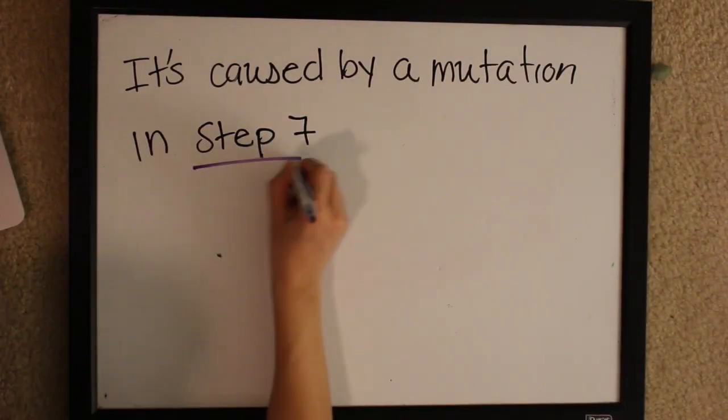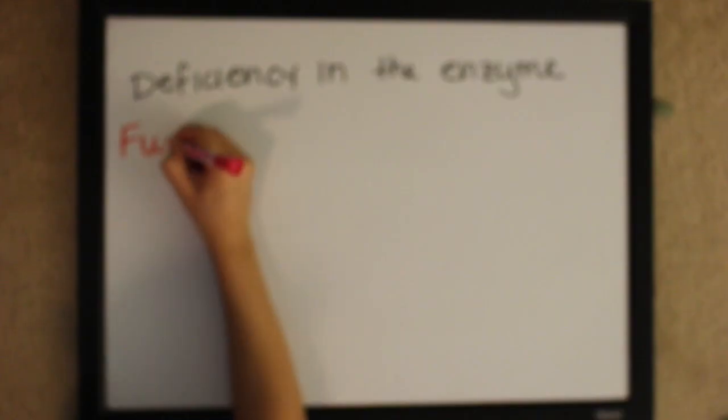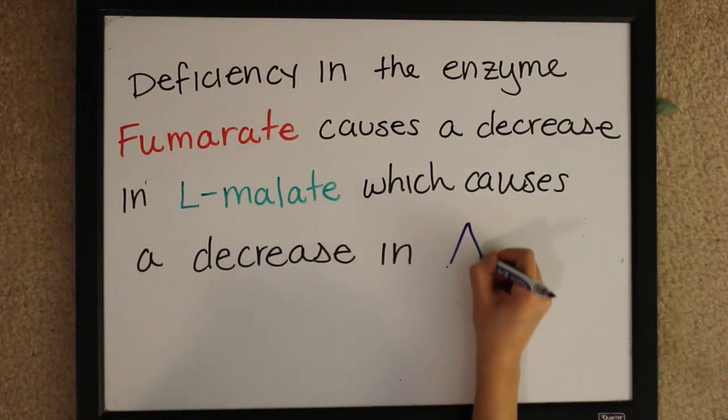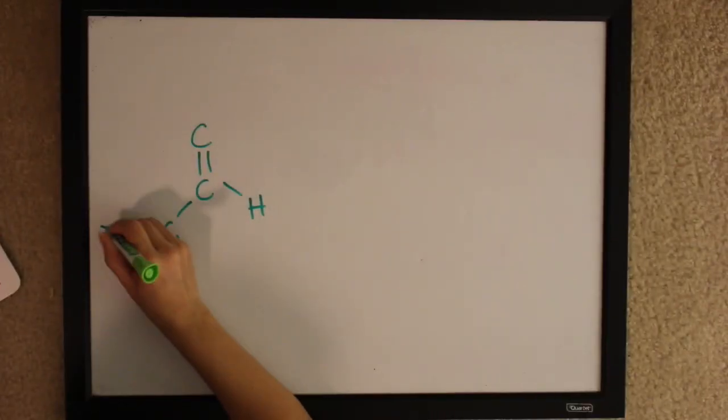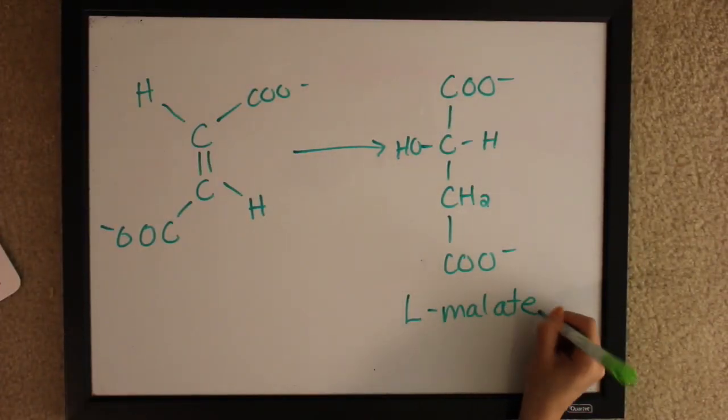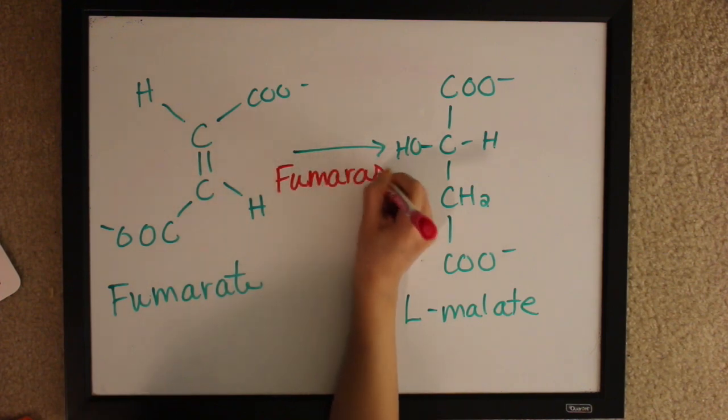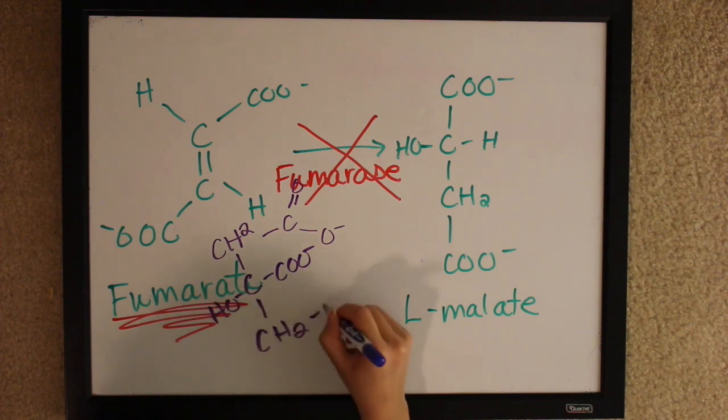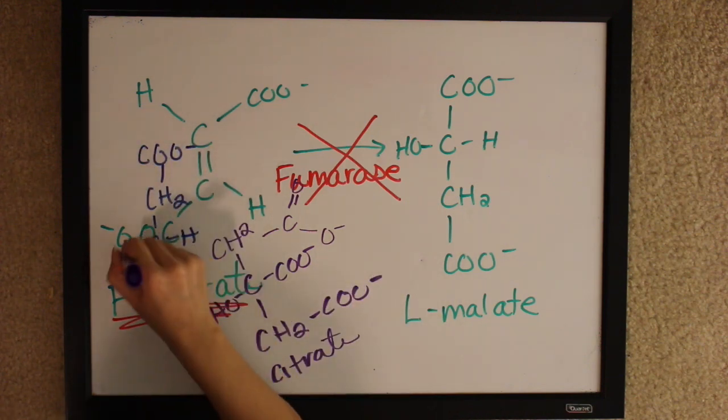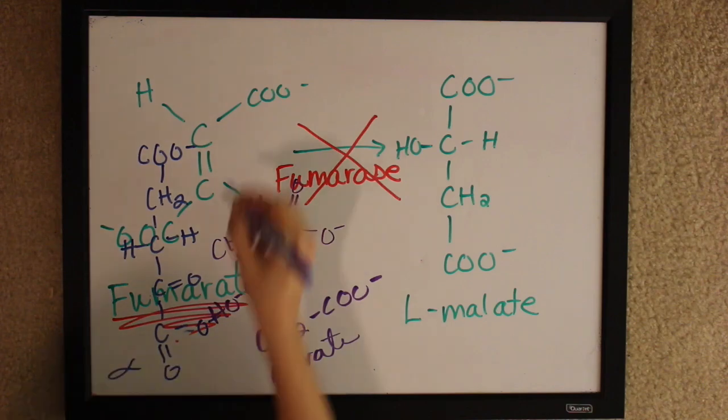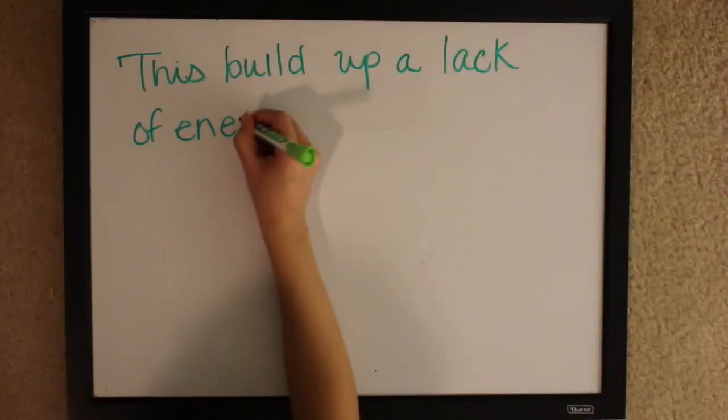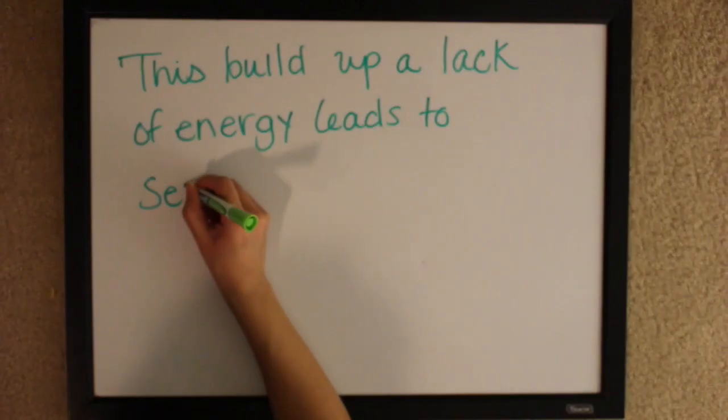The deficiency in the enzyme fumarase causes a decrease in the product L-malate, which causes a decrease in the overall ATP made in your body. If you look back at step seven, we are converting fumarate to L-malate with the enzyme fumarase. However, that doesn't work, so we have a buildup of citrate as well as alpha-ketoglutarate and so much more. It's just a mess. This buildup leads to a lack of energy as well as seizures, developmental problems, and sometimes death.